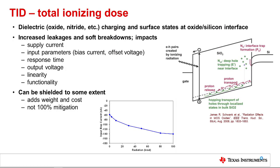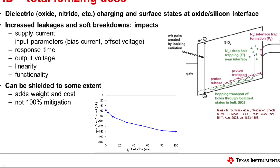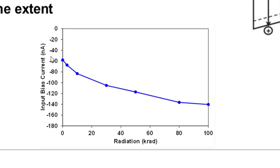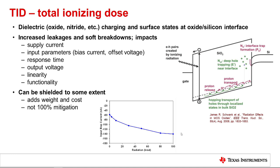Ionizing radiation can charge dielectrics such as oxide and nitride, resulting in traps in the dielectric, and can also cause surface states at the oxide-silicon interface. This leads to increased leakages and soft breakdowns, causing a rise in supply current and bias currents, and degrading parameters such as offset voltage and response time. It can also result in a shift in the output voltage of a regulator, ultimately leading to non-functionality. In this plot, I'm showing the input bias current of an op-amp versus radiation dosage — as dose increases, the input leakage increases. TID can be shielded to some extent, but this adds weight and cost to the mission.